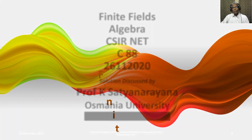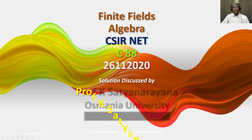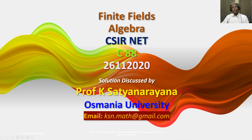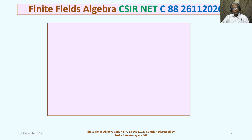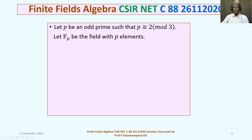We now discuss a problem from the section Algebra that appeared in the CSIR Net Exam. The problem is on finite fields and appeared in the CSIR National Eligibility Test held on 26th November 2020. The question is from Section C and carries 4.75 marks. The problem states: let P be an odd prime such that P is congruent to 2 mod 3. Let Fp be the field with P elements.